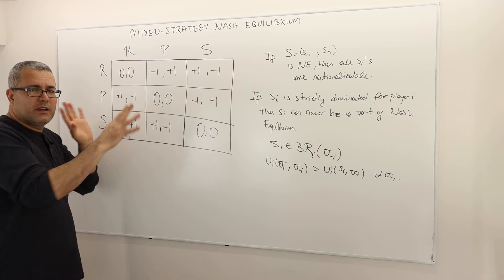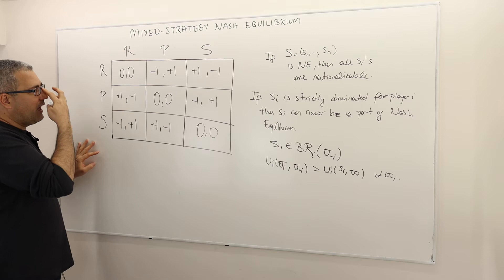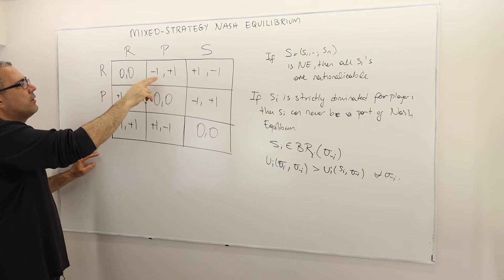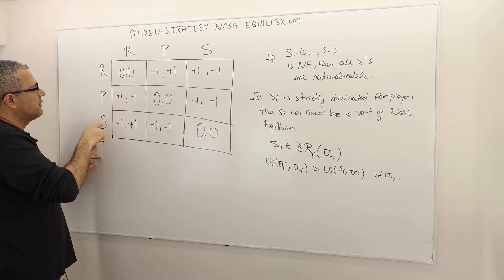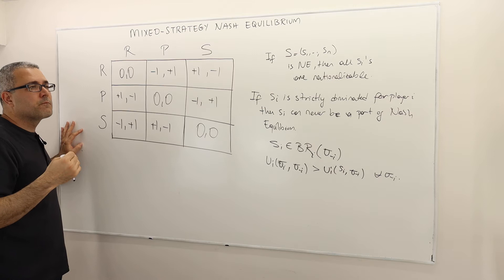This is, by the way, a rock-paper-scissors game. Whenever players choose the same strategy — rock-rock or paper-paper — it's a tie. Otherwise, paper covers rock so the paper player wins; rock crushes scissors so the rock player wins; and scissors gets crushed by rock so the rock player wins. If you look for pure strategy Nash equilibria in this game, there are none, very much like the matching pennies game.